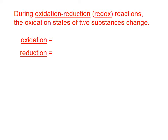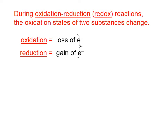During oxidation-reduction, or redox reactions, the oxidation states of two substances change. Oxidation is the loss of electrons, and reduction is the gain of electrons. Both of these processes occur in a redox reaction, because if something loses electrons, something else will gain them.